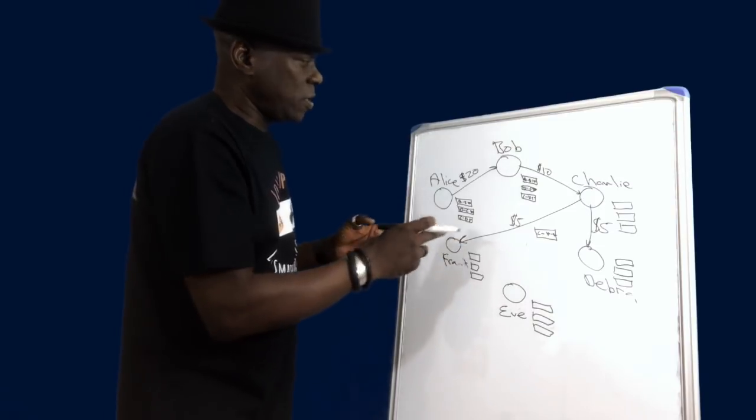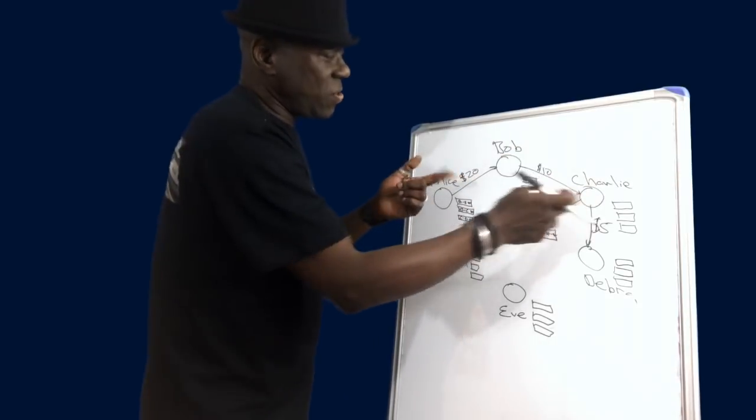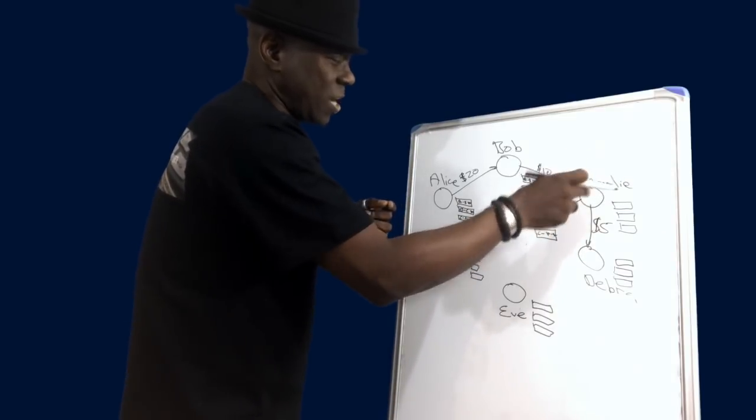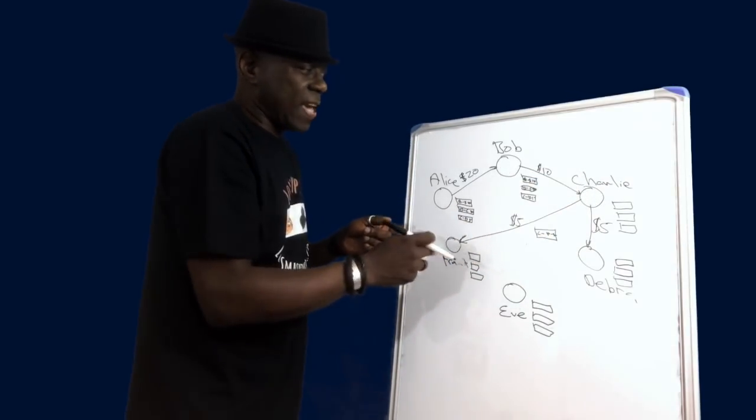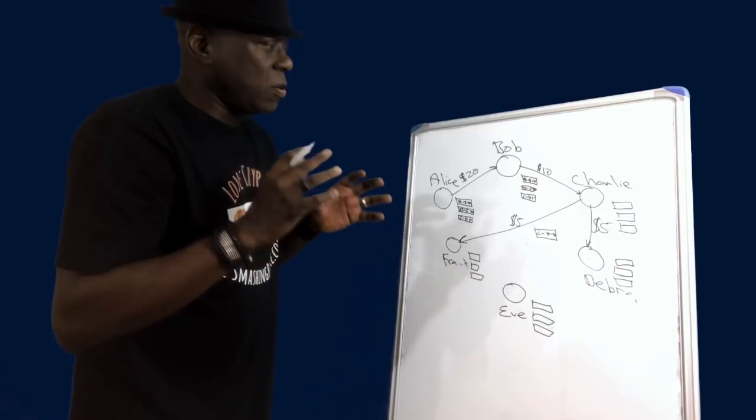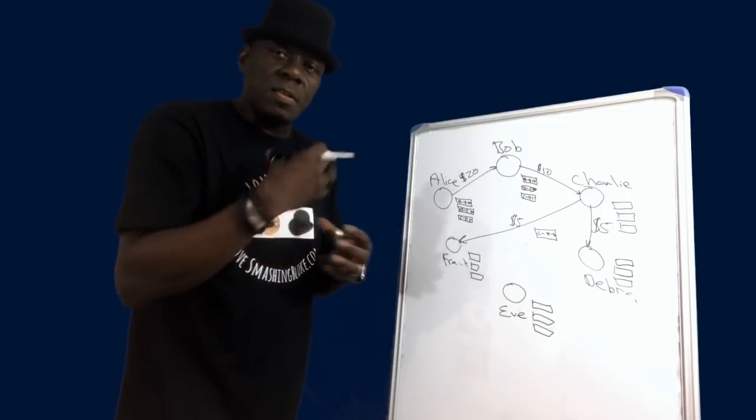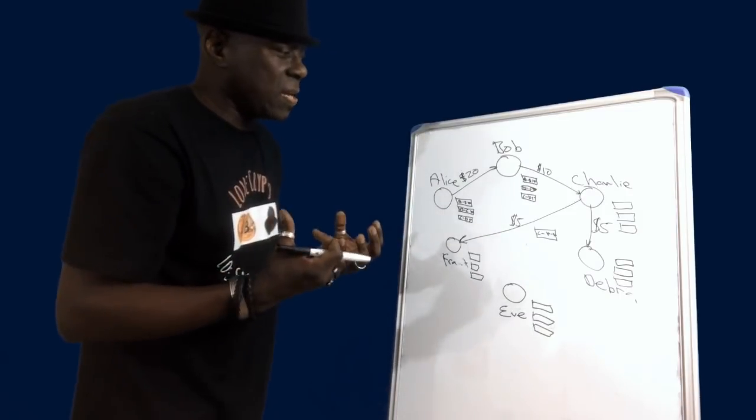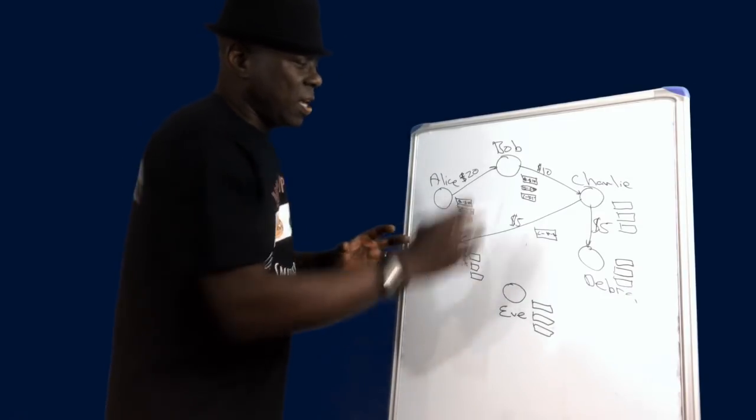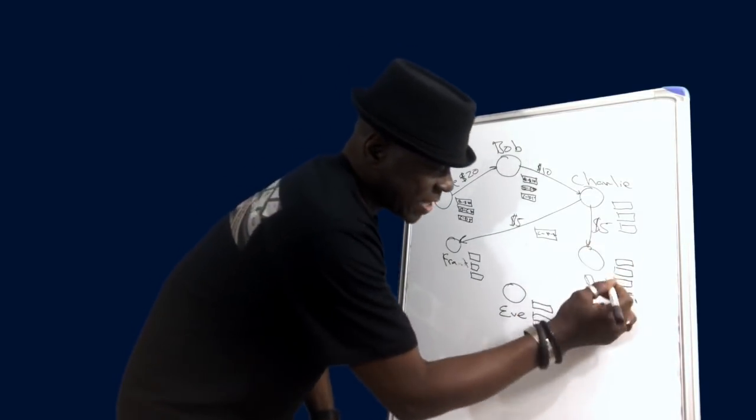And the way that is done, as I explained in my last video, is they first have to validate this transaction. The way that they do that is quite straightforward: we know that Alice sent Bob $20, Bob then sent Charlie $10, Charlie then sent Deborah $5, so Charlie should have $5 left to send over to Frank, so we can validate that.